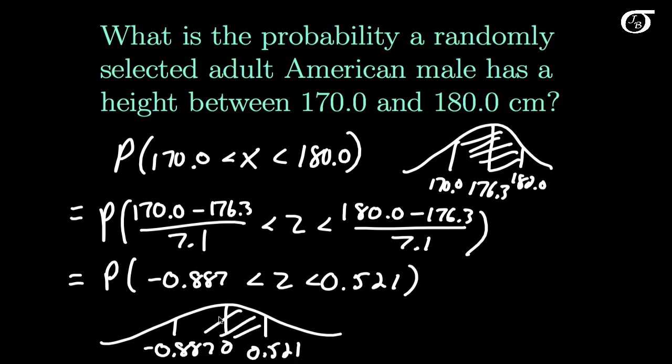That is the probability we seek. Using a computer or the standard normal table, that area is 0.511, which means this probability is 0.511.